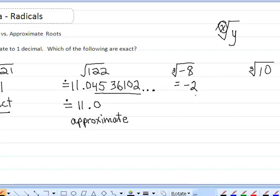So the cube root of negative 8 is negative 2. Is that exact? Did we round? We didn't round it off at all. So this is an exact answer.